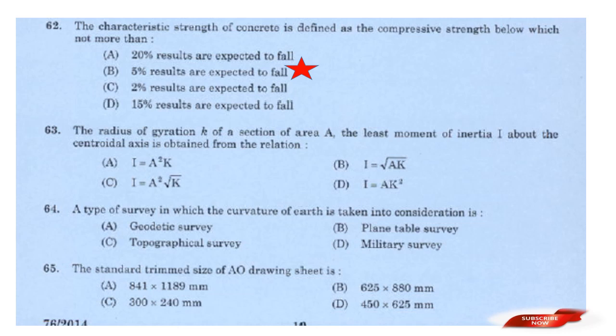Question: The radius of gyration K of a section of area A with least moment of inertia I about the centroidal axis is obtained from the relation? Options: I = A²K; I = √AK; I = A²√K; I = AK². Answer: Option D — I = AK².